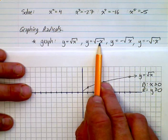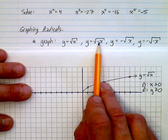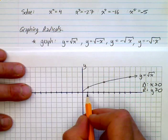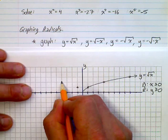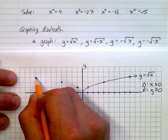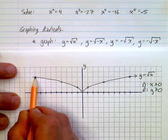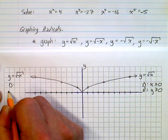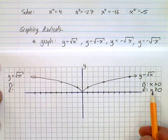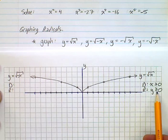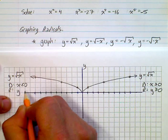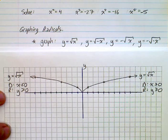We know we can't take the square root of a negative number, so for y = √(-x) to work, the x's have to be negative. If you remember transformations, making x negative is a reflection over the y-axis — so it's exactly the same shape: square root of 1 is 1, square root of 4 is 2, square root of 9 is 3, but reflected. The domain is x ≤ 0 and the range is y ≥ 0.